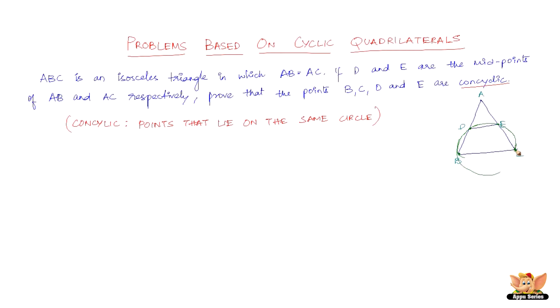This means that quadrilateral D, B, C, E is a cyclic quadrilateral. Now you know what rules to apply. To prove that D, B, C and E are concyclic, you just have to prove that the sum of the opposite angles is equal to 180 degrees.